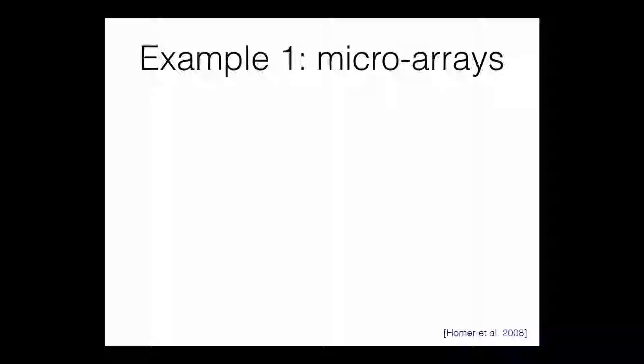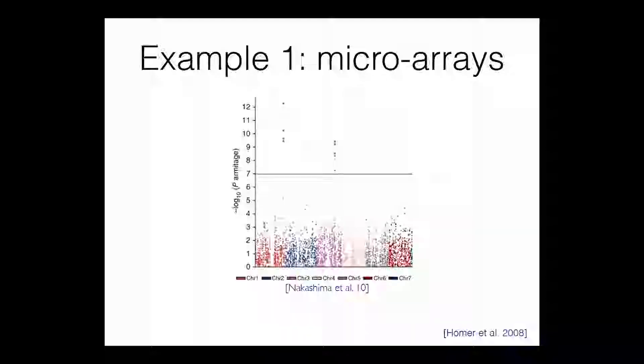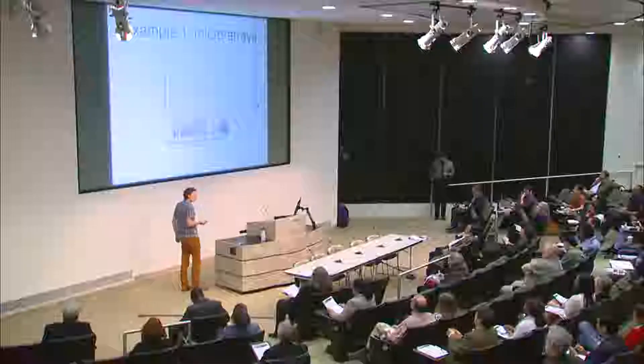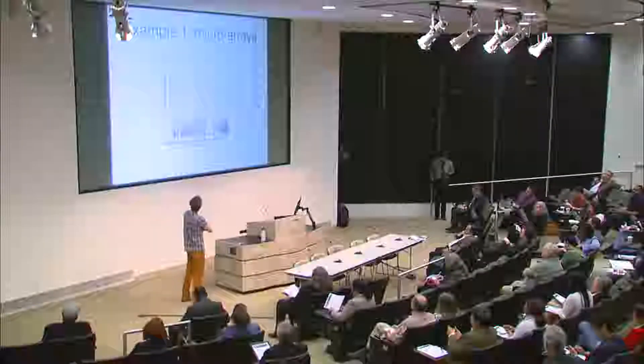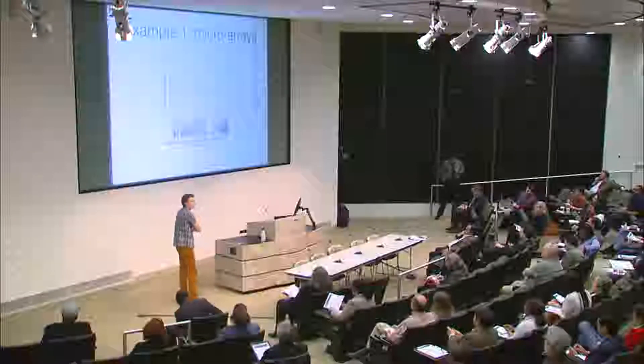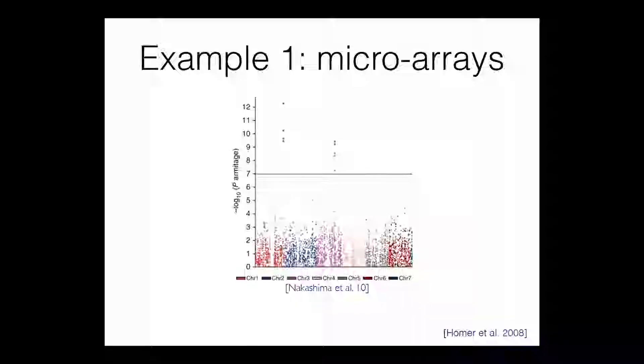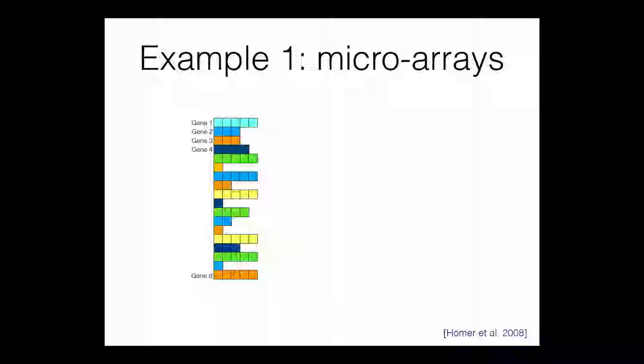Let me give some examples of privacy breaches to give you a sense that we might have problems and want to address them. So example one is microarrays. In microarray data, we can collect a bunch of gene expression levels across chromosomes here. And lots of times when we do studies, we want to release microarray data. And you might think, okay, if you have a bunch of people in a study and you release the counts of all their counts pooled together, things should be fine. Let's do a little quick example.